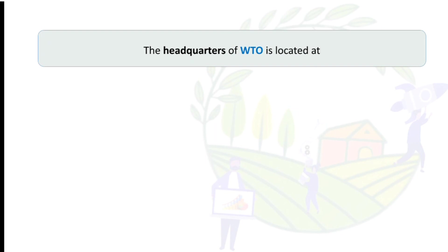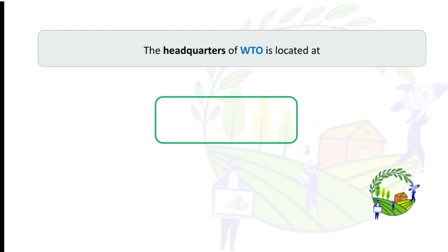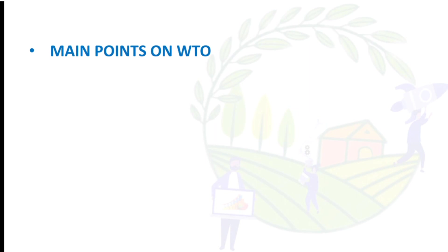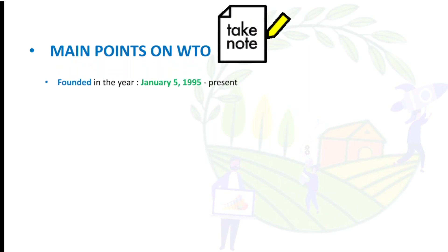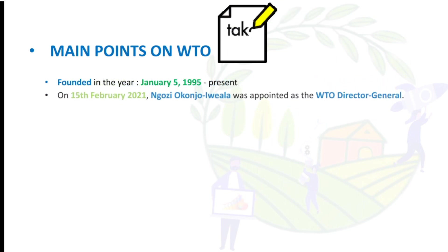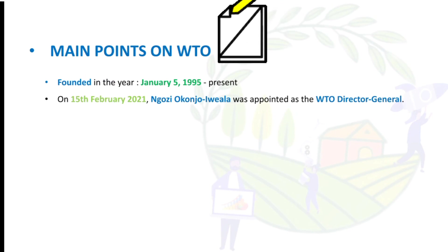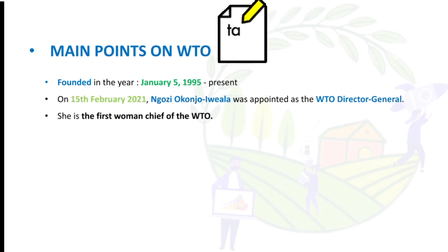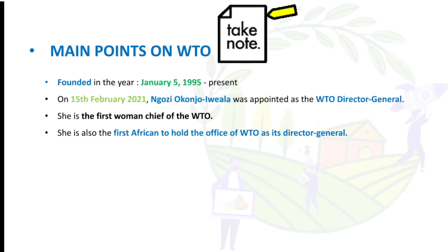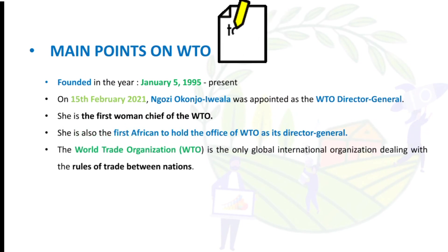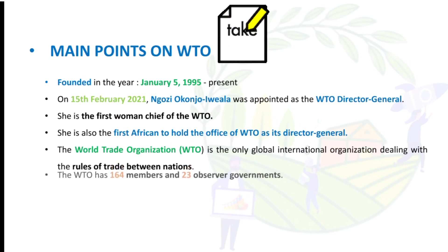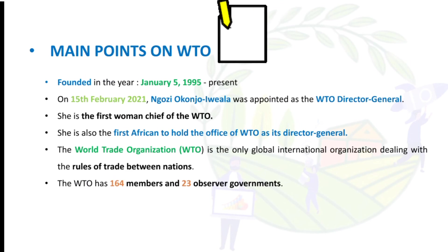The headquarters of the WTO — World Trade Organization — is located in Geneva, Switzerland. Key points on WTO: it was founded on January 1st, 1995. On 15th February 2021, Ngozi Okonjo-Iweala was appointed as WTO Director General — the first woman and the first African to hold that office. The WTO is the only global international organization dealing with rules of trade between nations, and it has 164 members and 25 observer governments.